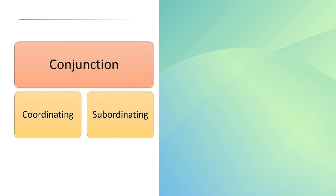We can divide conjunctions into two types: coordinating conjunctions and subordinating conjunctions. One other type of conjunction is also there — that is correlative conjunctions. Let's learn these types of conjunctions in detail.